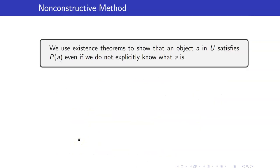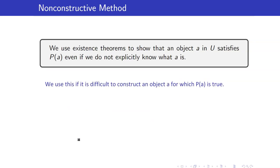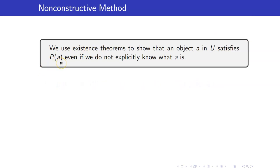Another way of proving existence theorems is the non-constructive method. In this method, we use other existence theorems to show that an object a satisfies P of a, even if we do not explicitly know what a is.